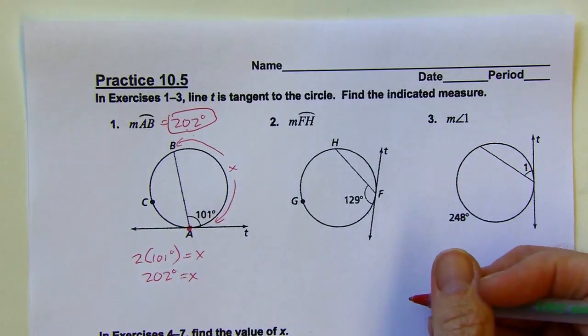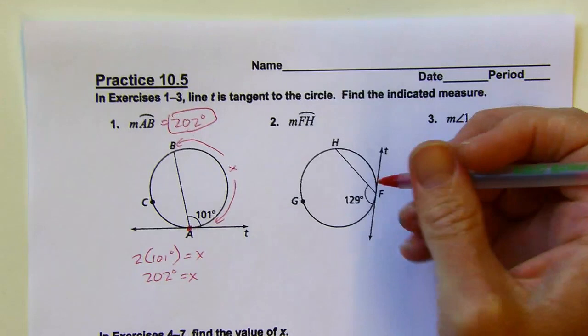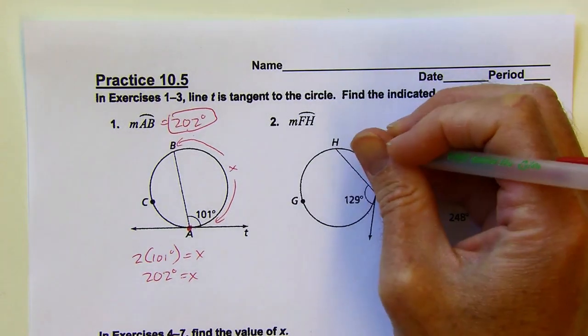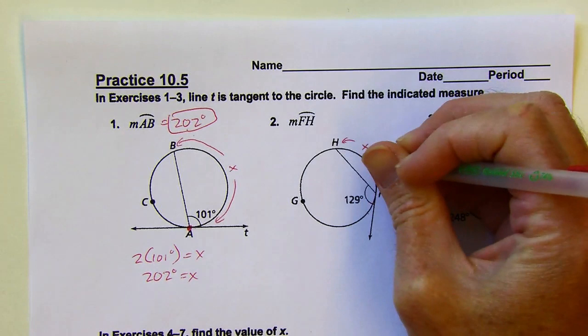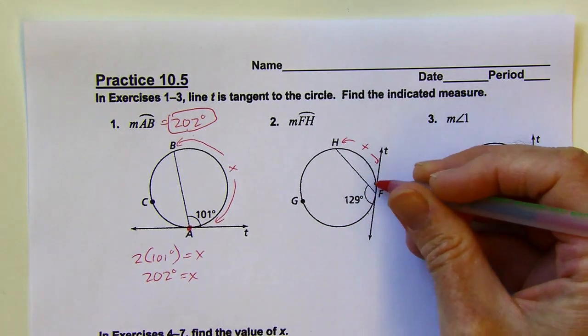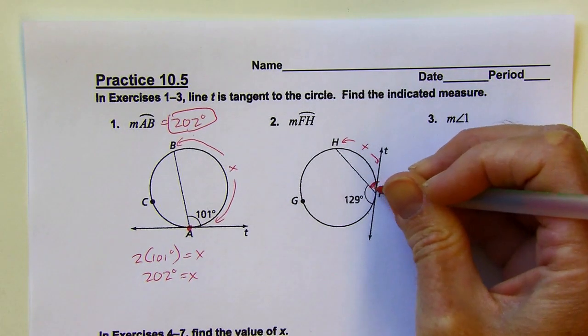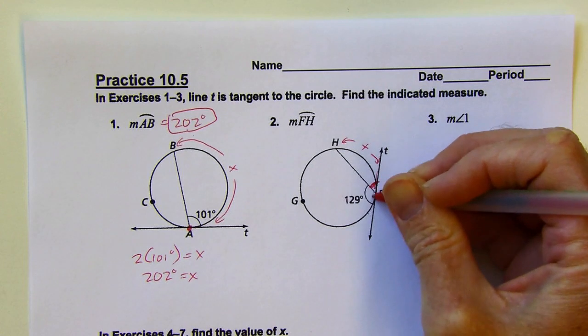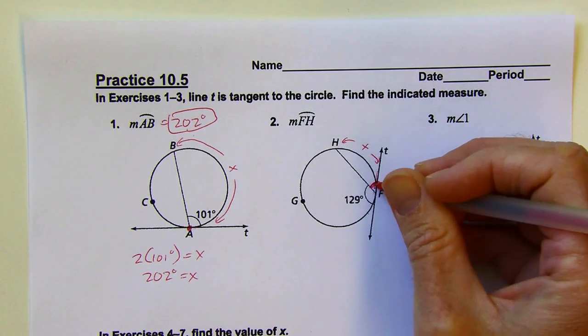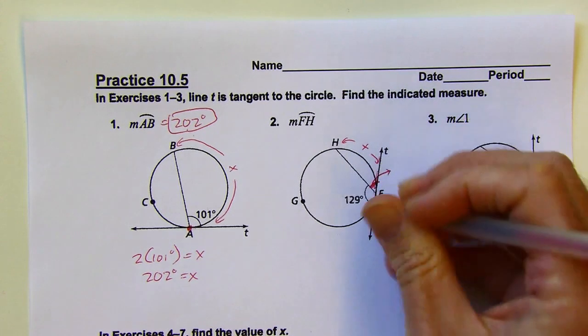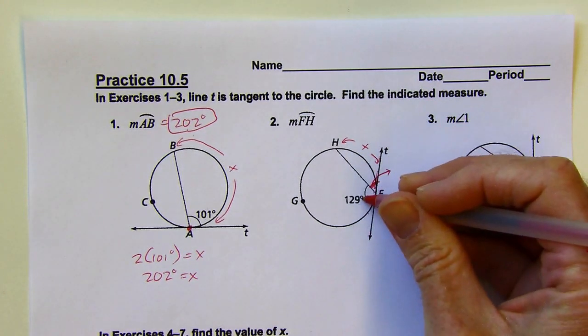Looking at the next one, FH. They didn't put the G in, so FH is going to be this arc. I don't have the measure of the angle that intercepts that arc, but I can find it really quickly because I've got a linear pair there. This angle in here is going to be 180 minus 129.